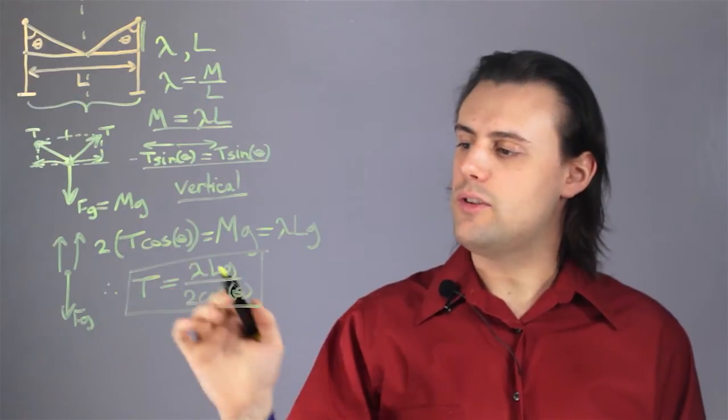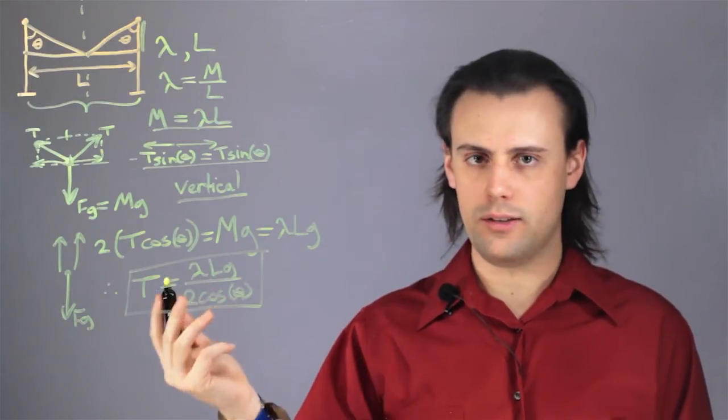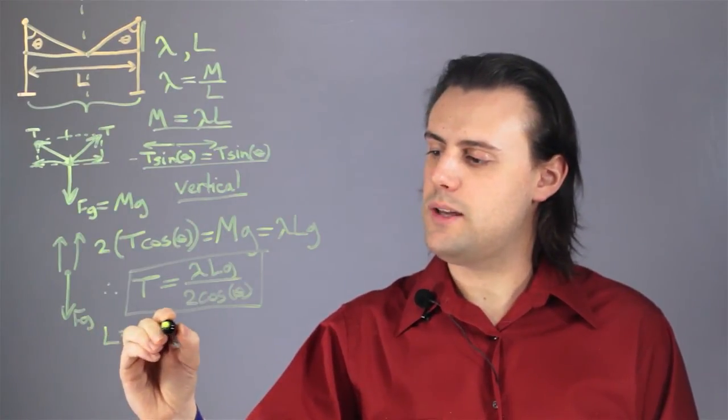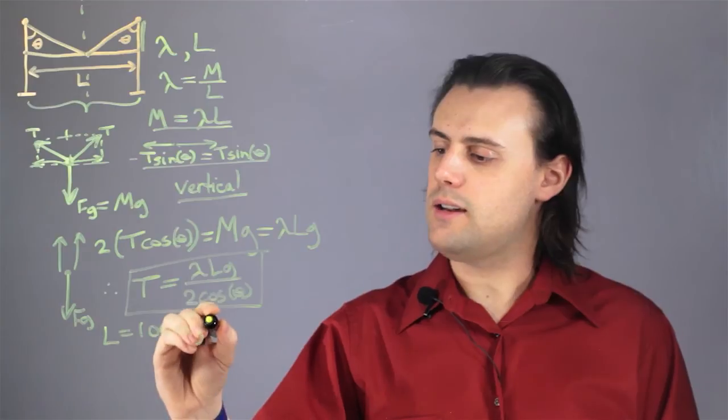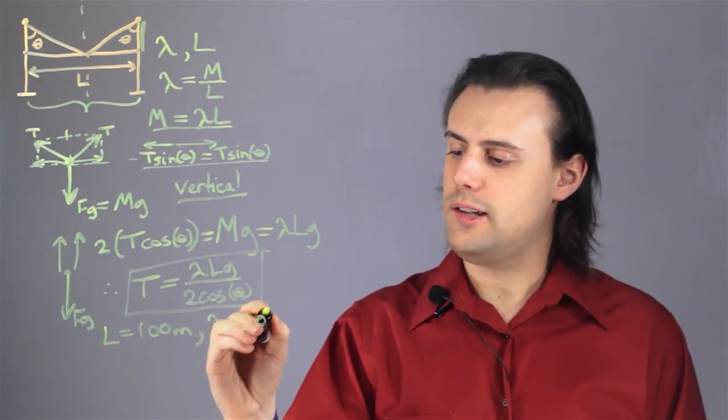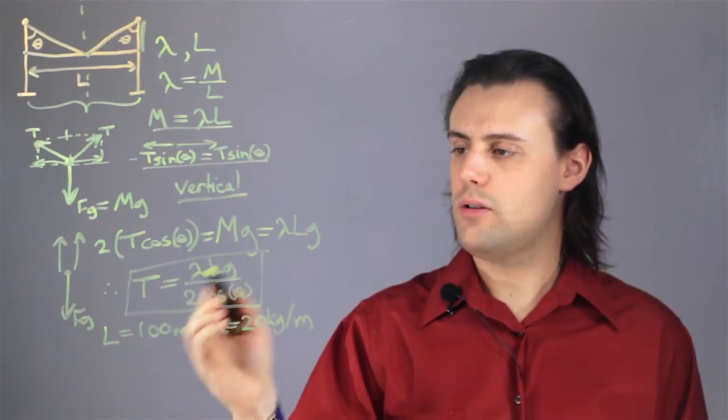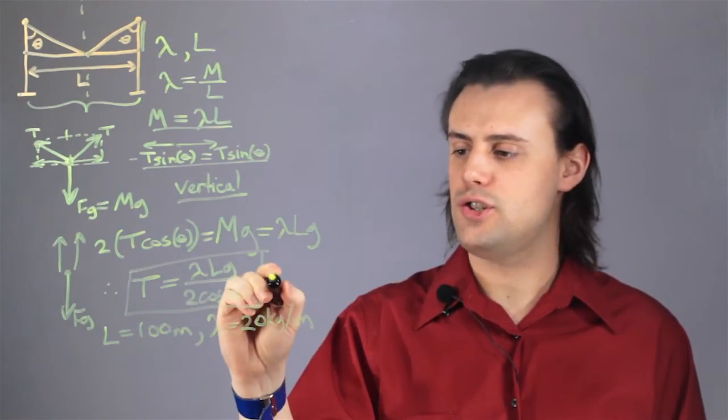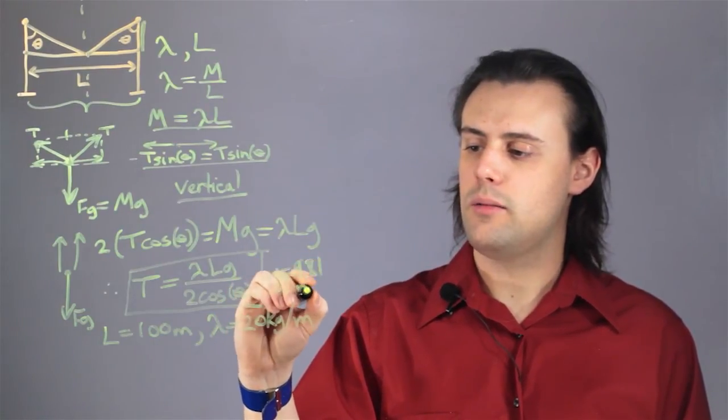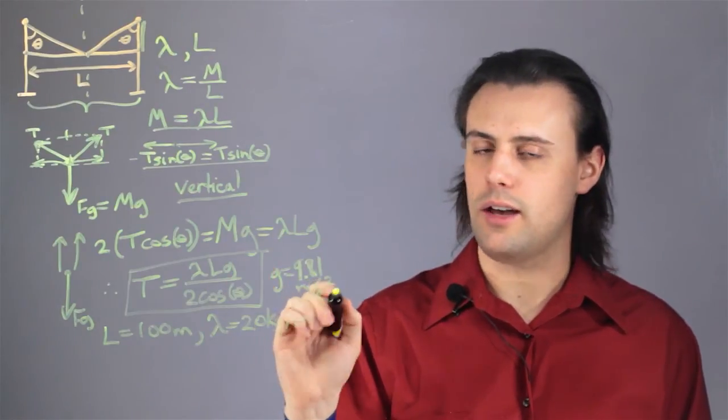Now I can use numbers in this example to calculate what the force would be. So if I consider a bridge that has a length equal to 100 meters and a linear density that's equal to 20 kilograms per meter, I know the gravitational acceleration g is equal to 9.81 meters per second squared. I'm using MKS SI units.